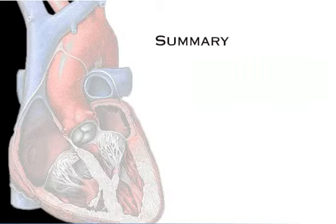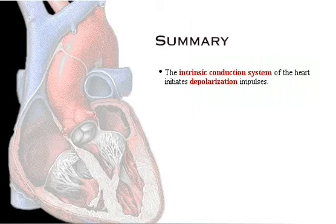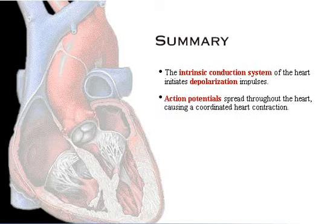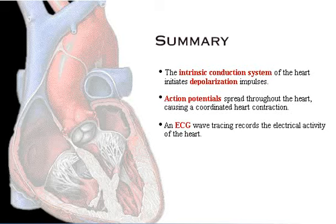Here's a summary of what we've covered. The intrinsic conduction system initiates depolarization impulses. Depolarization spreads throughout the heart, causing a coordinated heart contraction. An ECG wave tracing records the electrical activity of the heart.